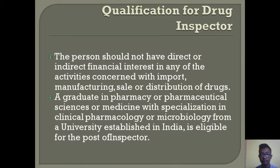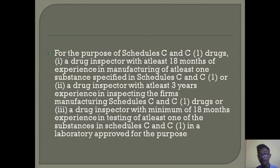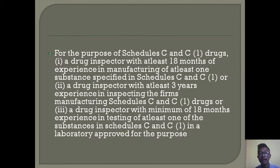For the purpose of Schedule C and C1 drugs, a drug inspector with at least 18 months of experience in manufacturing of at least one substance specified in Schedule C and C1 is eligible, or a drug inspector with at least three years of experience in inspecting the firms of manufacturing Schedule C and C1 drugs, or a drug inspector with minimum 18 months of experience in testing of at least one of the substances in Schedule C and C1 in an approved laboratory.